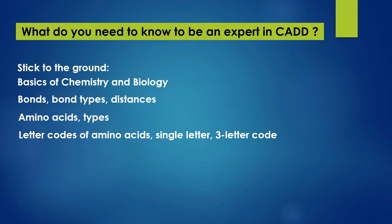You have to give meaningful input so the computer can run its algorithms and produce a meaningful output. For example, you need to know the features of a hydrogen bond — its distance and which atoms are involved. If you want to study proteins, you need to know about amino acids, their single-letter and three-letter codes, and the interactions that happen in macromolecules. All this basic chemistry and biology knowledge is essential to become an expert in CADD.